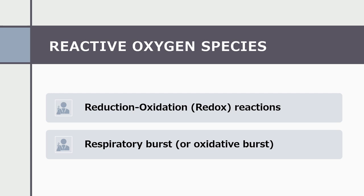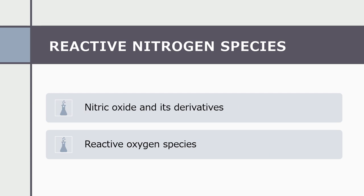The reactive oxygen species are produced during reduction-oxidation, or redox, reactions occurring mainly in the mitochondria of the cell, and during the respiratory burst or oxidative burst that occurs in phagocytic cells such as neutrophils and macrophages. Reactive nitrogen species are nitric oxide and its derivatives, and as these substances also contain unstable oxygen molecules, they can also be grouped under reactive oxygen species. So these are the two main types of free radicals in our body.